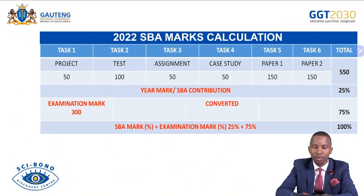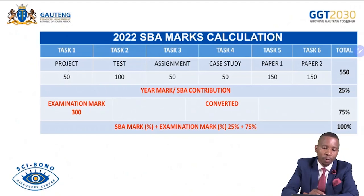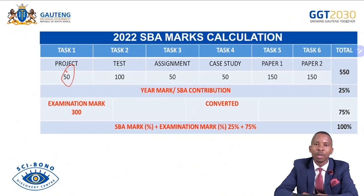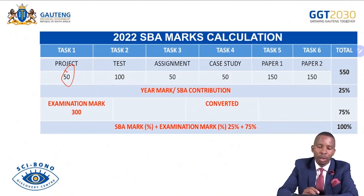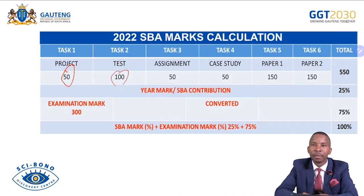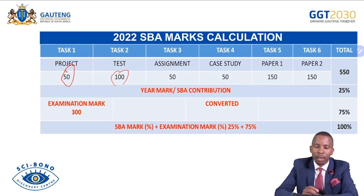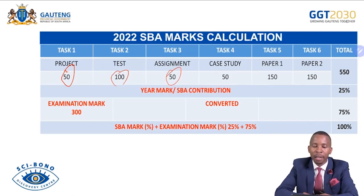It is written 2022 SBA mark calculation. In Term 1 you did the project out of 50 marks — it was marked and you were given feedback. Still in Term 1 you were given a test out of 100 marks, and you know the outcome. In Term 2 there was Task 3, an assignment out of 50 marks, and it was marked.